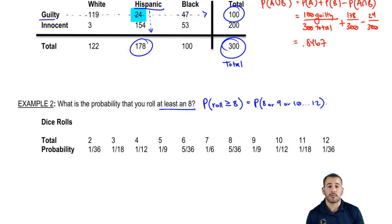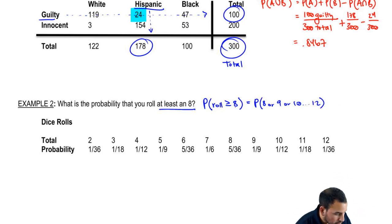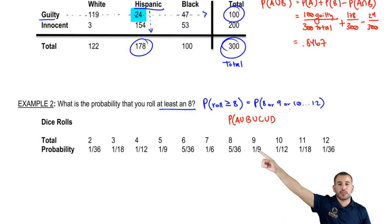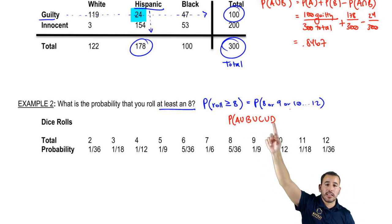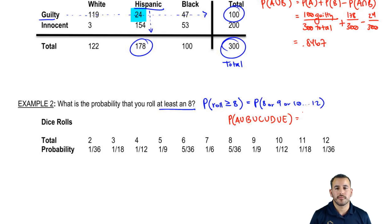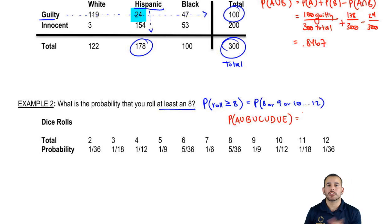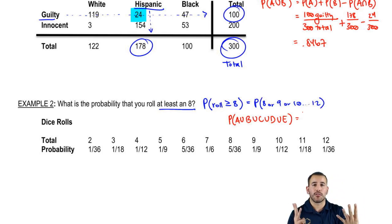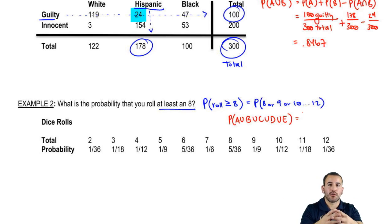We're not saying we want to roll an eight on one and then a nine on another — we just want to roll a total of eight or nine or ten or up to twelve. Now, would this be a disjoint event or jointed? It's actually going to be disjoint. The reason is you can't toss two dice, get a three, and at the same time roll two dice and get a four — it's the same two dice. The sum is either going to be three or it's going to be four. So these are disjoint — dice rolls are disjoint.